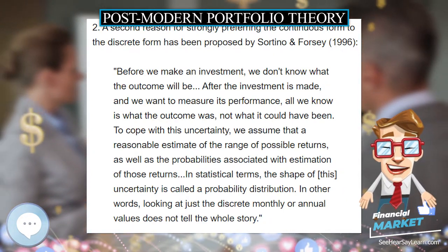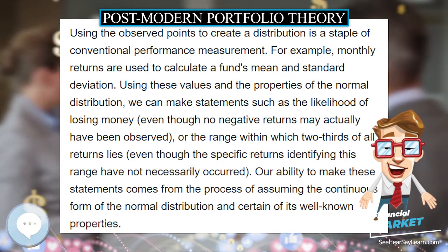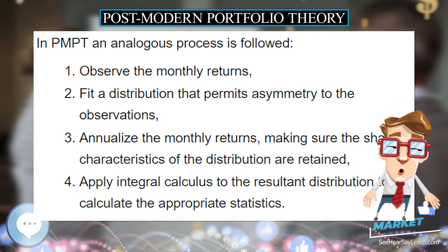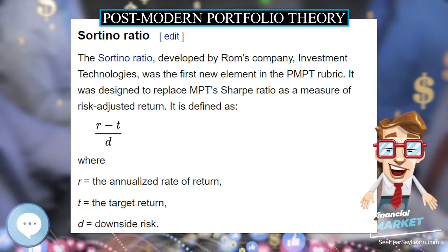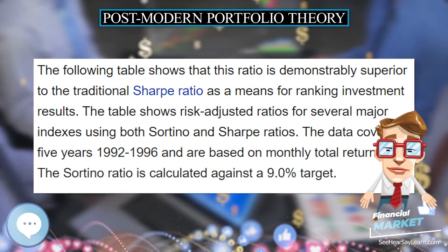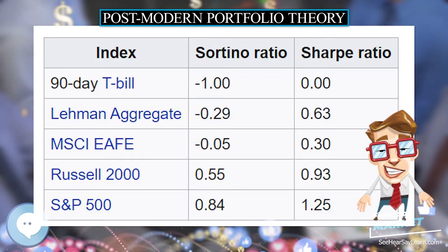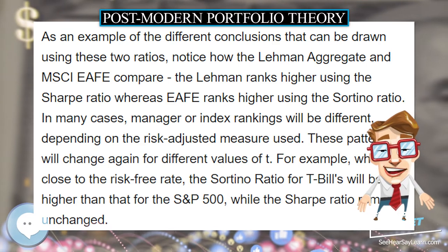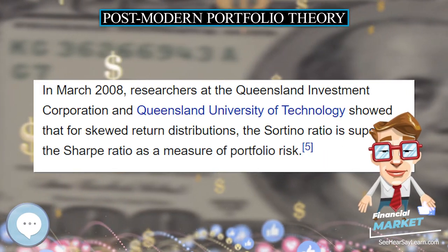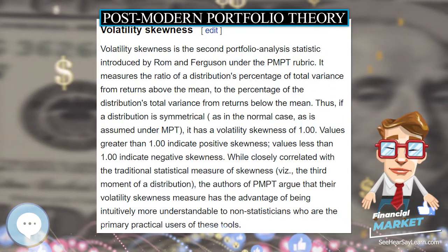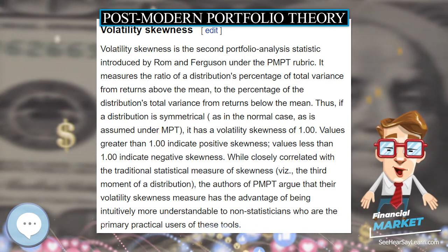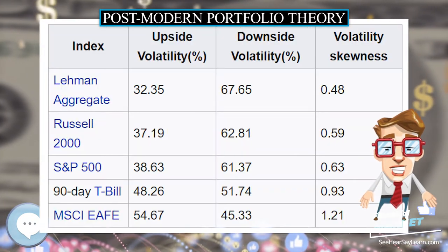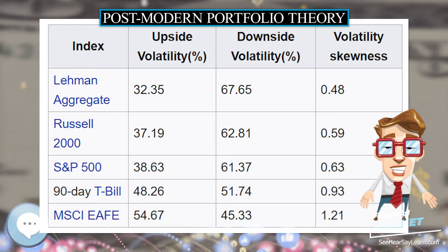Empirical investigations began in 1981 at the Pension Research Institute, PRI, at San Francisco State University. Dr. Hal Forsey and Dr. Frank Sortino were trying to apply Peter Fishburne's theory published in 1977 to pension fund management. The result was an asset allocation model that PRI licensed Brian Rom to market in 1988. Mr. Rom coined the term PMPT and began using it to market portfolio optimization and performance measurement software developed by his company. These systems were built on the PRI downside risk algorithms. Sortino and Stephen Satchel at Cambridge University co-authored the first book on PMPT, intended as a graduate seminar text in portfolio management.